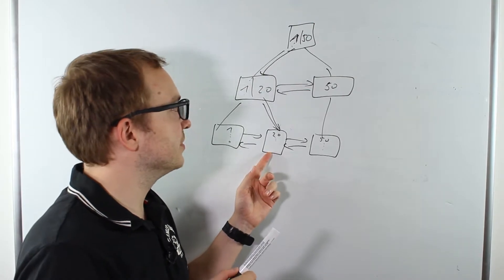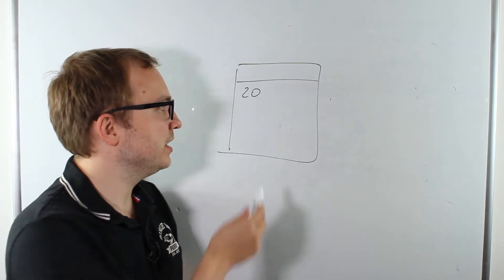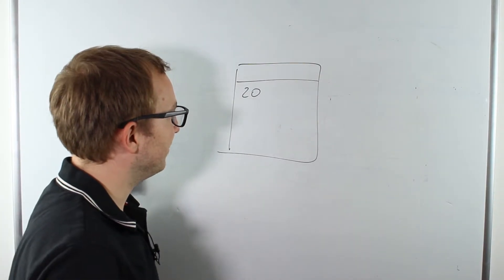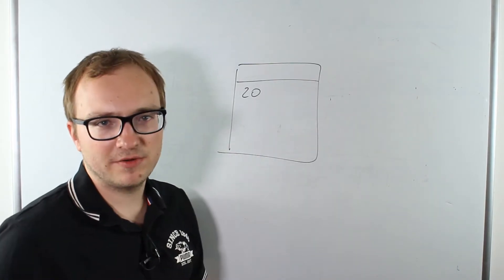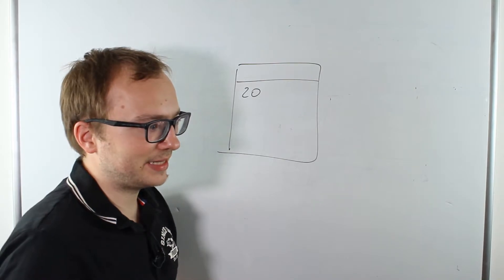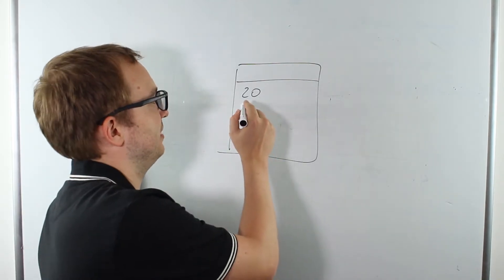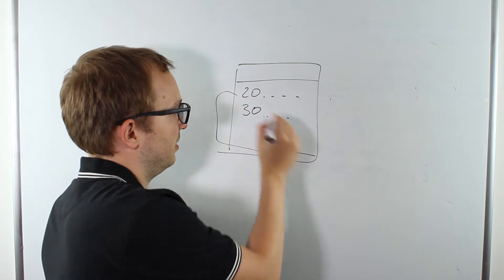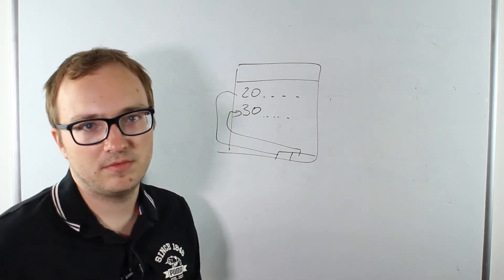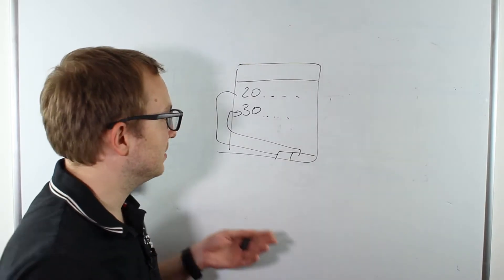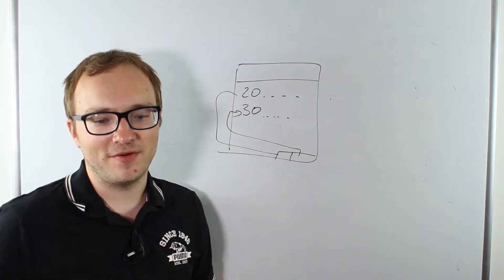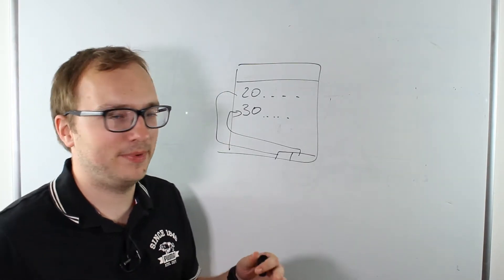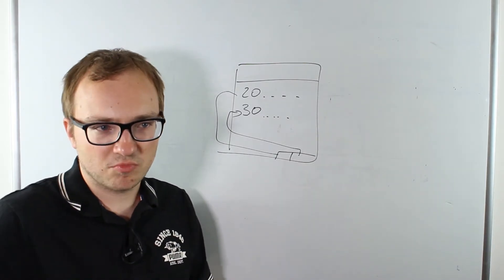Let's assume we found this data page and want to insert the value 30. We are at page 20 and have three scenarios to cover. The first scenario: everything is fine. We have enough space on the page for row 30 and can just insert it, adding the row data and a new entry in the offset array for the 30. Nothing more happens — this is the simple case where we just insert the row.